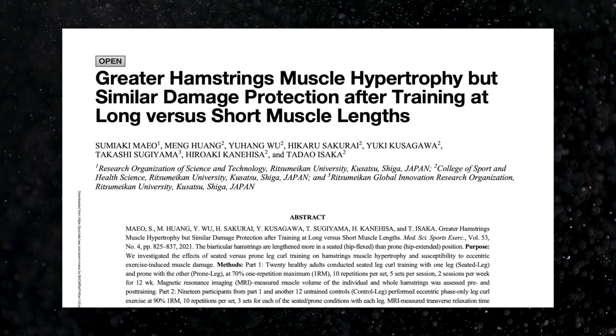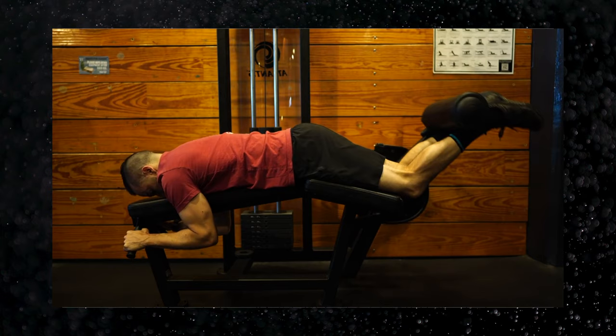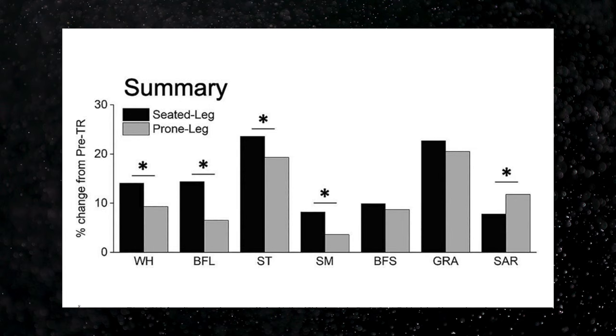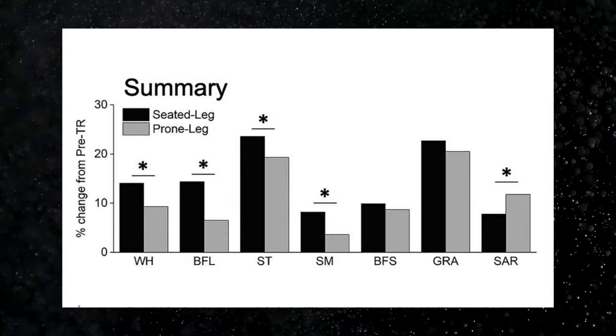Normally I'd caution against relying too heavily on a single EMG study, but a second study from Mayo 2020 supports this concept. Their study compared seated versus lying leg curls done for 12 weeks, finding that the seated leg curl resulted in significantly more strength and hypertrophy for all hamstrings except the biceps femoris short head — which makes sense since it doesn't cross the hip. Practically, this doesn't mean you should avoid all short-length exercises, but when choosing between a long-length and short-length option, the longer length will likely result in more overall hypertrophy long term.